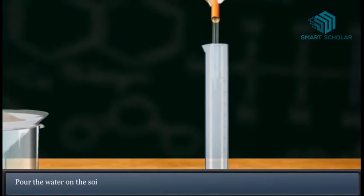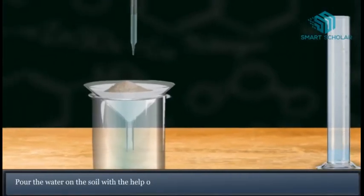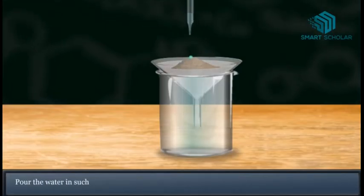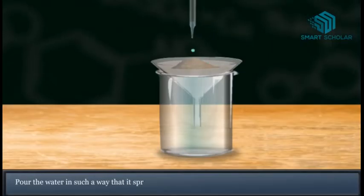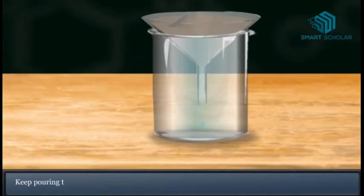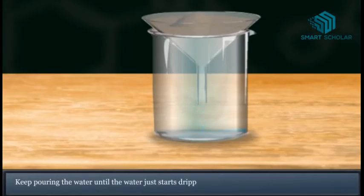Pour the water on the soil with the help of a dropper. Pour the water in such a way that it spreads over the entire surface of soil. Keep pouring the water until the water just starts dripping from the funnel.